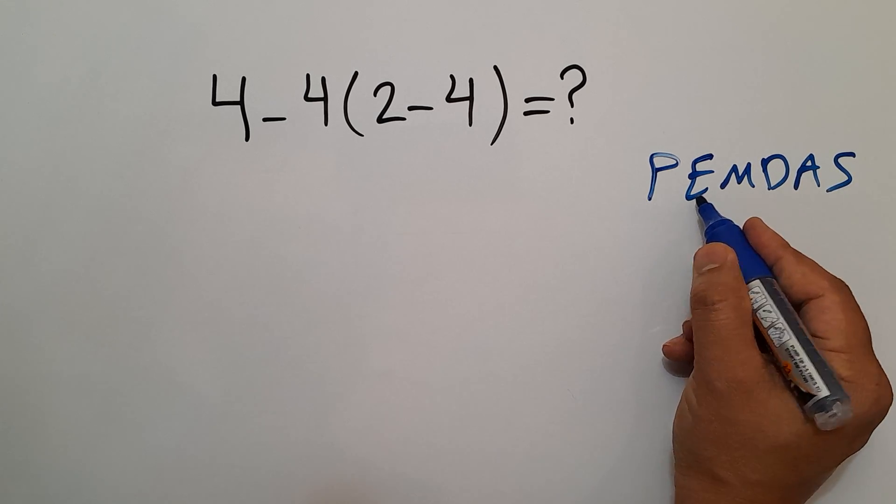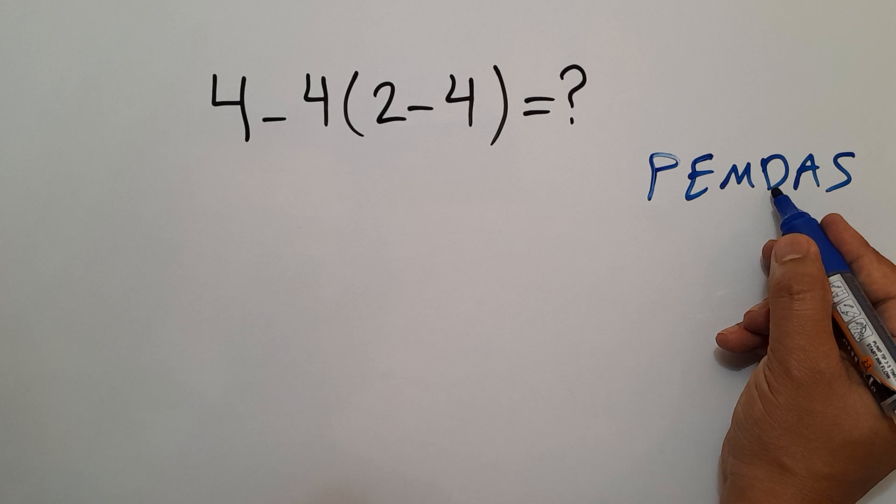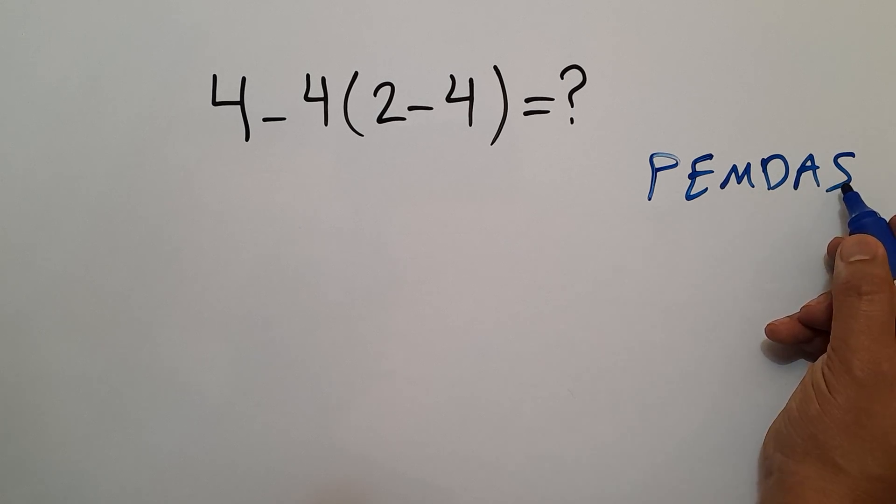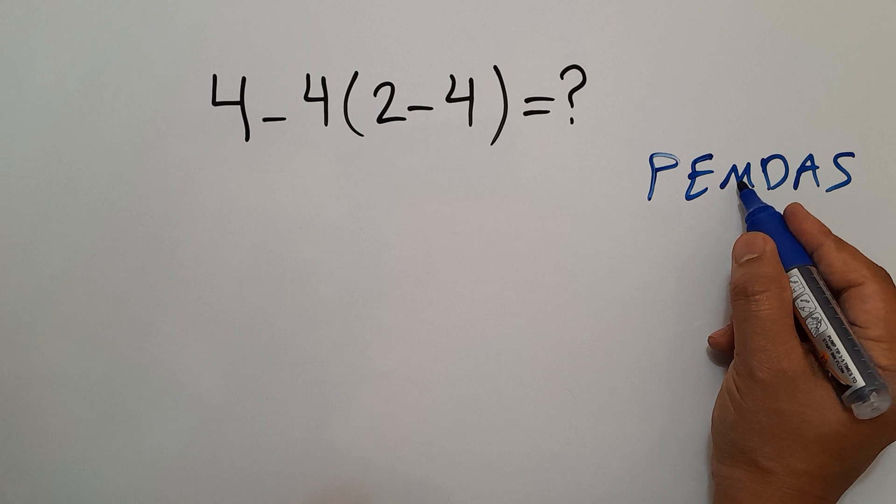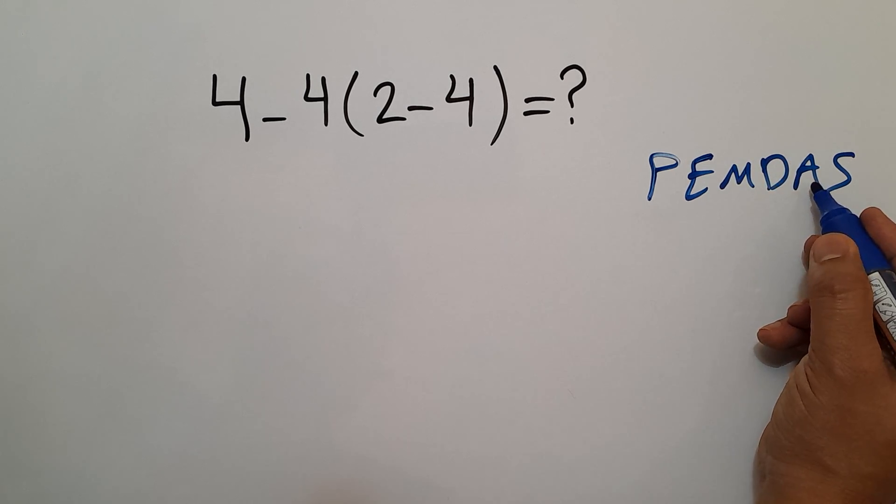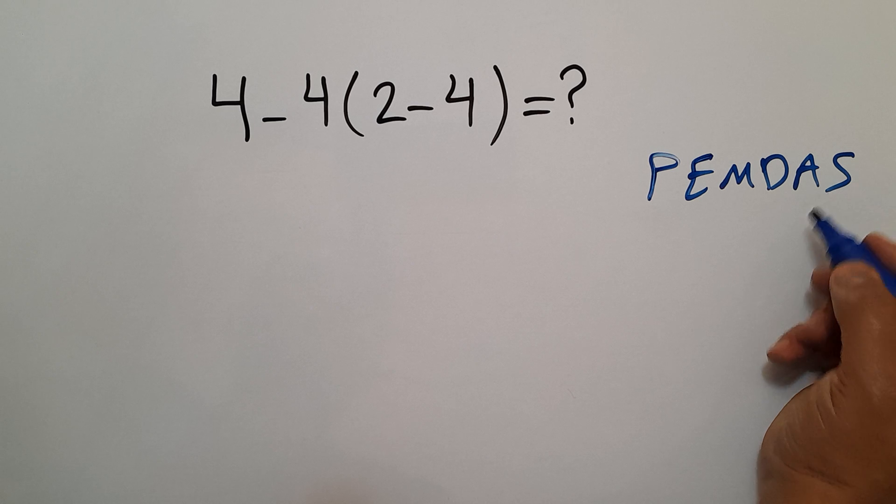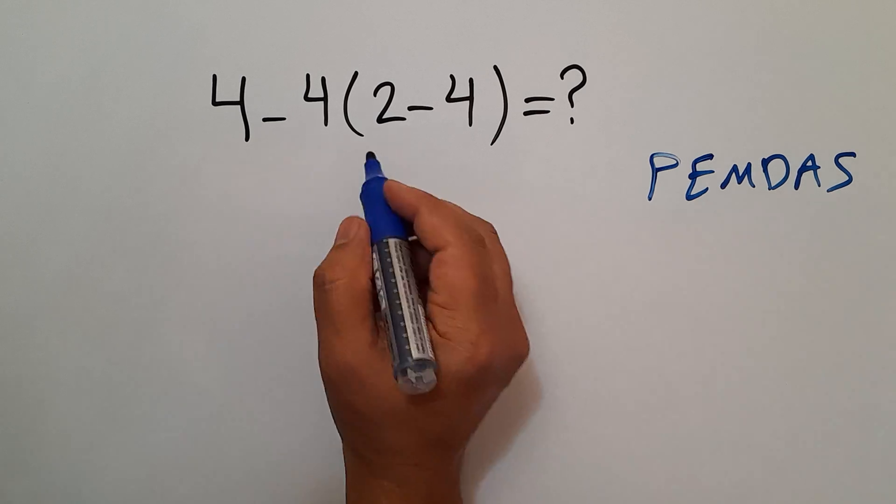parentheses, then exponents, then multiplication and division, and finally addition and subtraction. Remember that multiplication and division have equal priority and we work from left to right. The same goes for addition and subtraction. So here we first do...